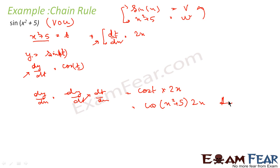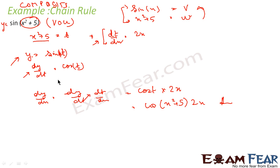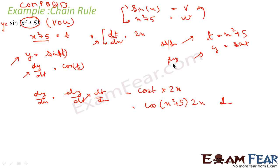The more questions you solve, the better it is. Watch this video for the concepts, but I recommend you to solve as many questions as you can because the more questions you solve, the better is your speed and the better is your concept. In this question, we had sine of x squared plus 5 as a composite function, which we wrote as v of u where v is sine x and u is x squared plus 5. We assumed u as t, got y as sine t, found dy by dt and dt by dx, and multiplied to get dy by dx.